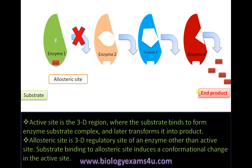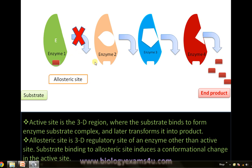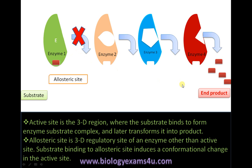This is called feedback inhibition — where the end product of the process binds to the allosteric site, causing a conformational change on enzyme 1, thereby inhibiting further production of that particular product. This is how accumulation of certain products is controlled inside a cell by the feedback inhibition mechanism. Hope you got the point — thank you so much for watching, you are with biologyexamsfree.com.